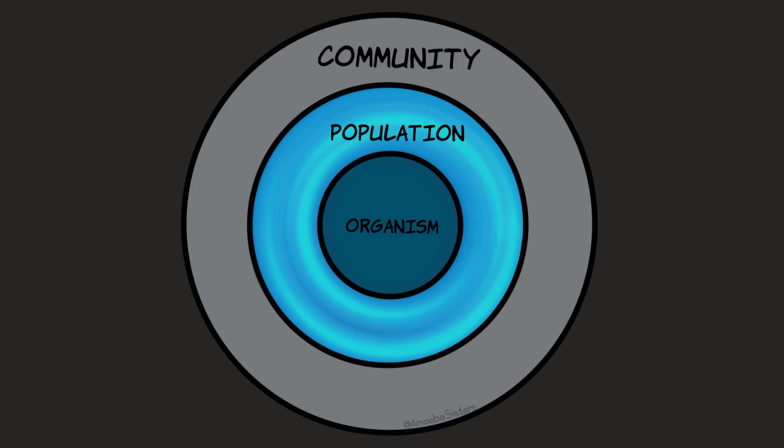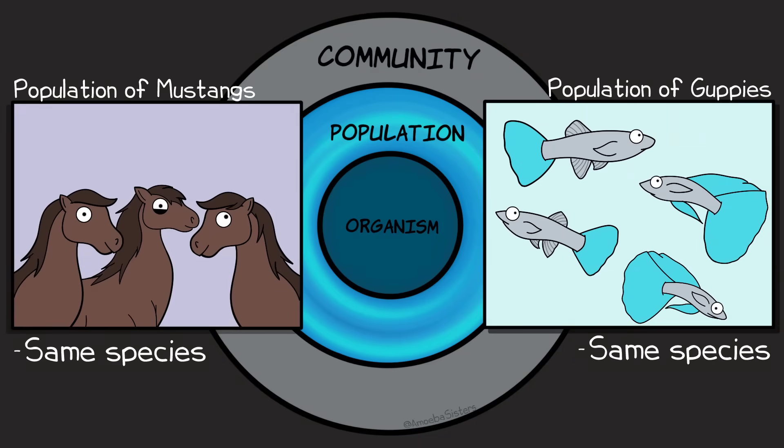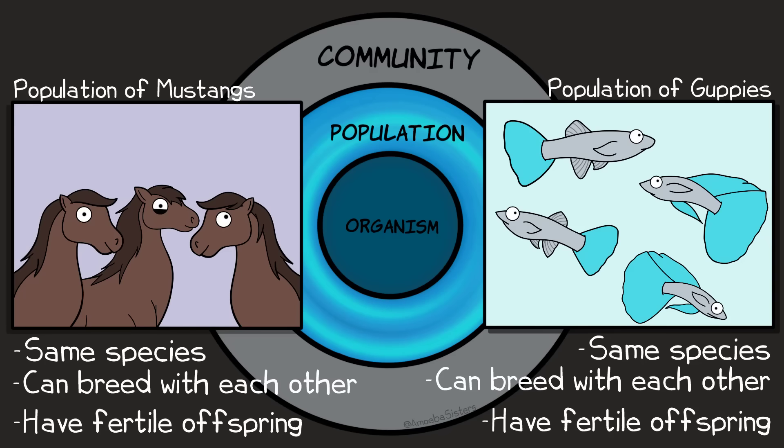A reminder from our ecology videos, a population in this case is a group of organisms that are all the same species and can breed with each other and have fertile offspring. However, there can be variety among a population as they are not clones of each other.